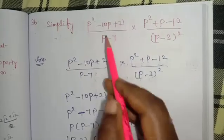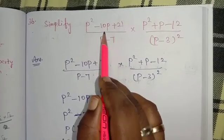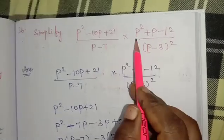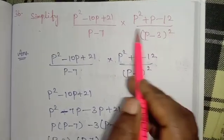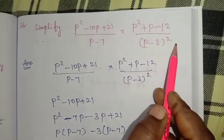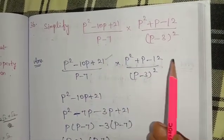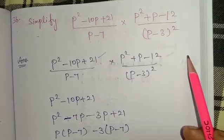Number 36. Simplify p squared minus 10p plus 21 by p minus 7 into p squared plus p minus 12 by p minus 3, the whole squared. First is factorization.